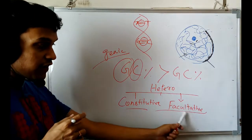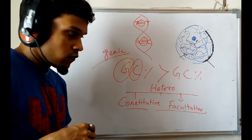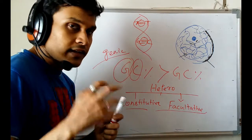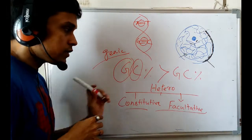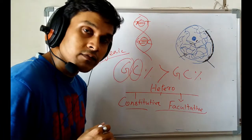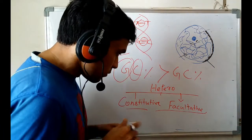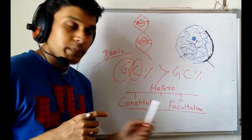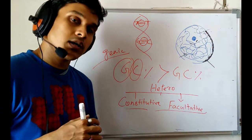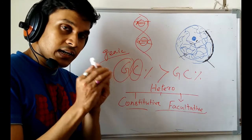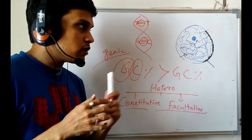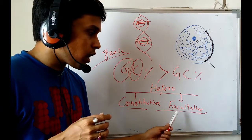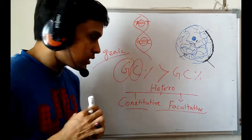If I consider facultative heterochromatin, the first property holds true — it is condensed. But the second property is false for this type, because facultative heterochromatin is actually gene-rich. It may contain genic parts, but due to its condensed structure, RNA polymerase and transcription factors do not get access to this region.